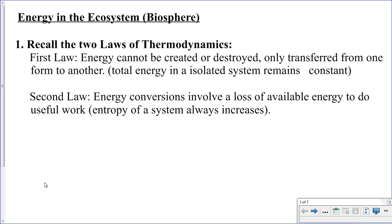The second law of thermodynamics deals with efficiency. What it says is that whenever there is an energy conversion, it will not be 100% efficient, and where that energy goes is in the form of heat. Whenever there is an energy conversion, there is a loss of usable energy — energy that is available to do work. The rest of that energy can't be destroyed, but it is released in another form, typically heat. When we talk about the word entropy, that is dealing with disorder, and when reactions are taking place, the overall entropy is going to increase, and much of that increase is due to the production of heat.